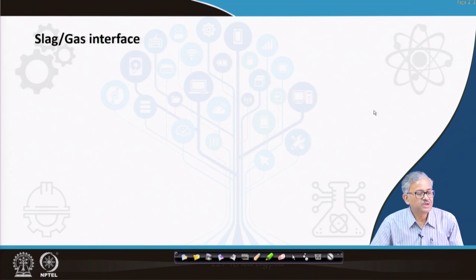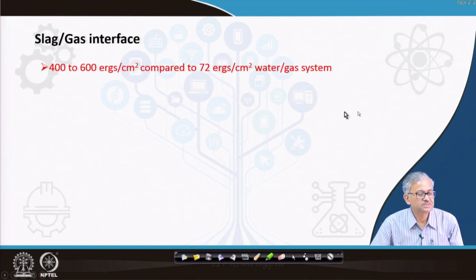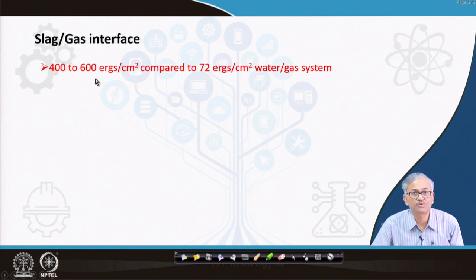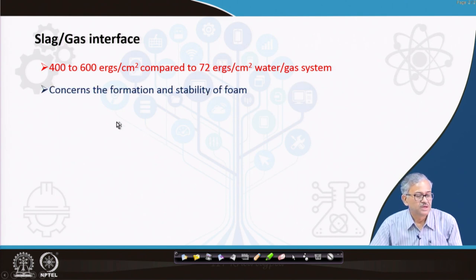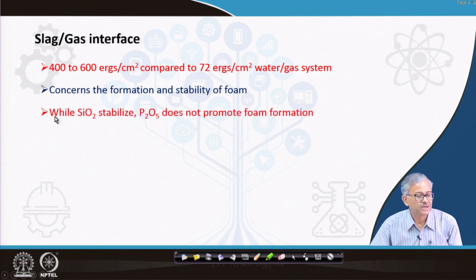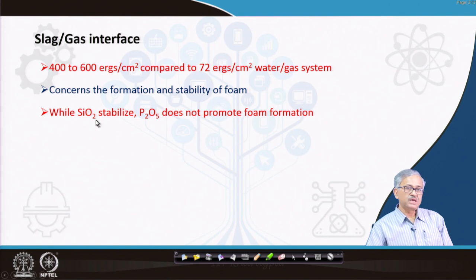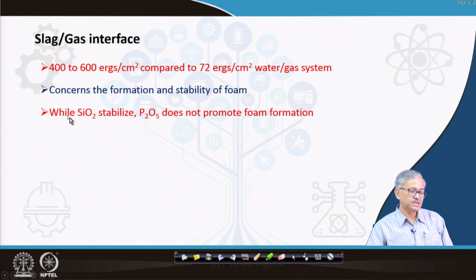Now considering the slag-gas interface: the interfacial tension is 400 to 600 ergs per cm², compared to 72 ergs per cm² for a water-gas system. This is also quite high and concerns the formation and stability of foam. It has been found that SiO₂ stabilizes the foam, whereas P₂O₅ does not promote foam formation. SiO₂ stabilizes the foam — that is important.